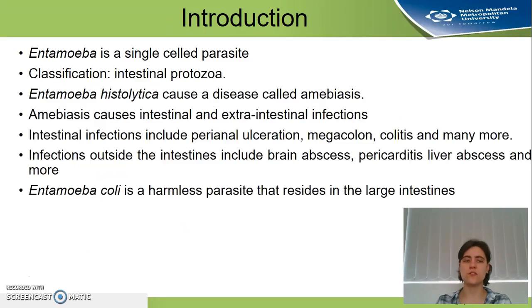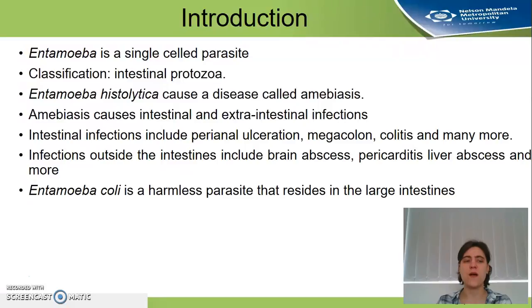An introduction to this parasite: Entamoeba species is a single-cell parasite classified as an intestinal protozoa. Entamoeba histolytica causes diseases such as amoebiasis, which can be intestinal amoebiasis or extra-intestinal infections. Intestinal includes perianal ulcerations, and extra-intestinal is outside the intestines, such as brain abscess. Entamoeba coli is a harmless parasite that resides in the large intestines and does not cause any diseases.